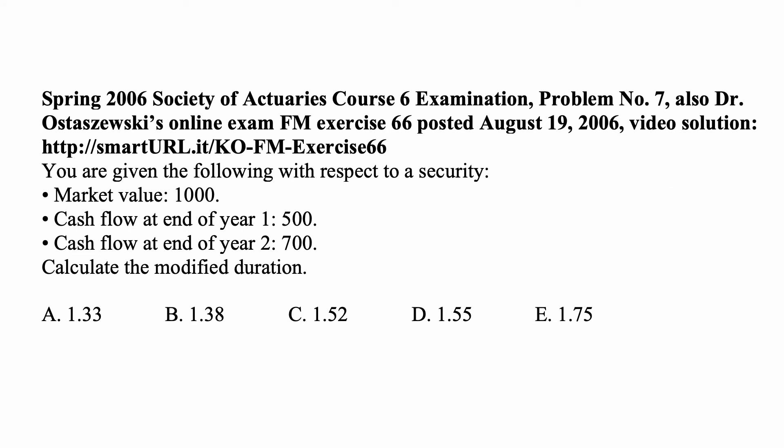Here's a problem for today for exam FM on financial mathematics. You are given the following with respect to a security: market value is 1,000, cash flow at the end of year 1 is 500, cash flow at the end of year 2 is 700. Calculate the modified duration.